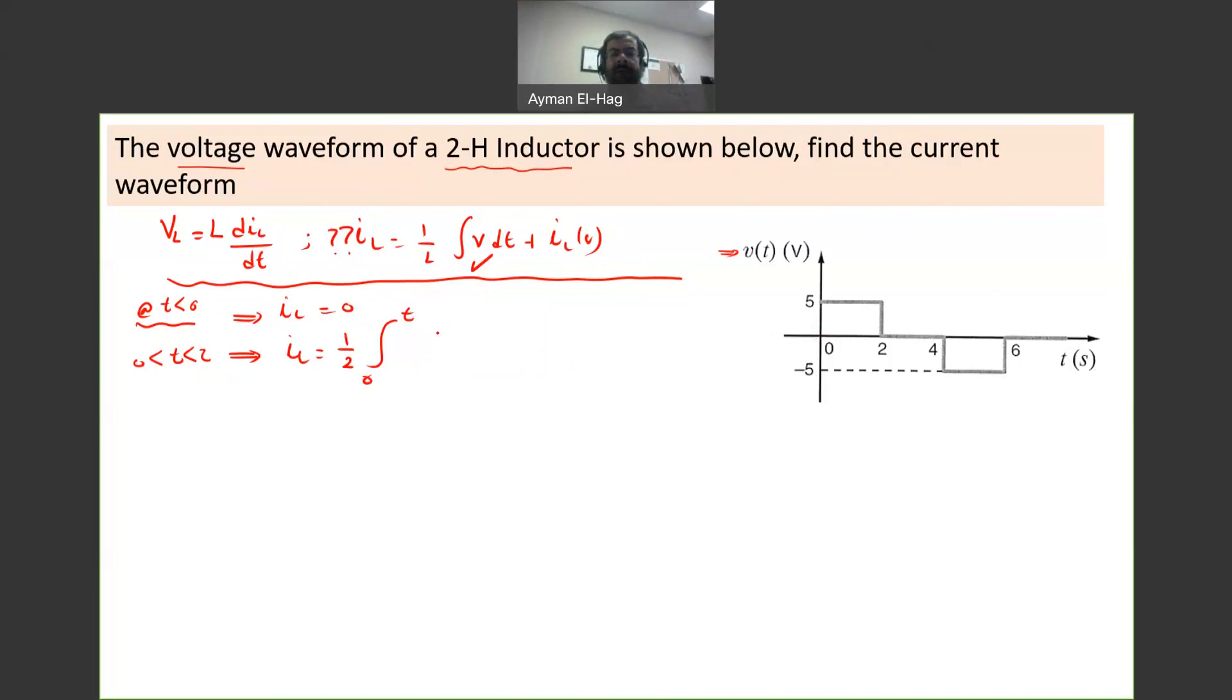We have the voltage, which is 5 here, d tau. The d variable is different than the limit of integration. So if I use T here, I use d tau, plus IL of 0, which is equal to 0. If you do this, you find this equals 5 over 2 times T. This is your current.